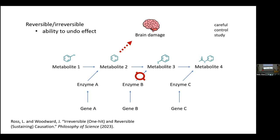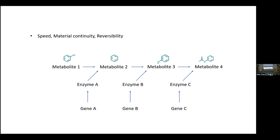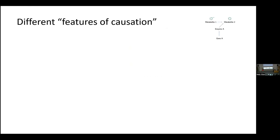One thing that Woodward and I discussed in a paper is that in many causal modeling techniques, there's often an assumption that the causal relationship is reversible — if it's not, this is a problem because then you won't pick it up as a genuine causal relationship. So the third distinction is whether causes are reversible or irreversible. Three different types of causation discussed in some fine-grained detail. How should we understand these?